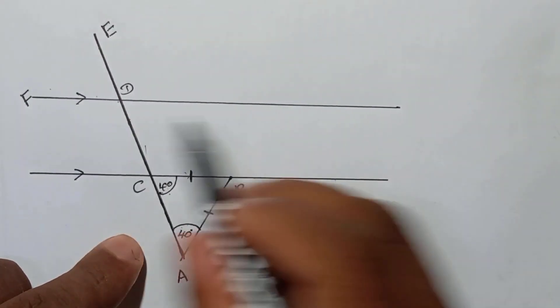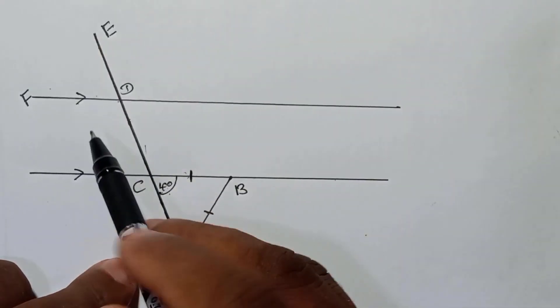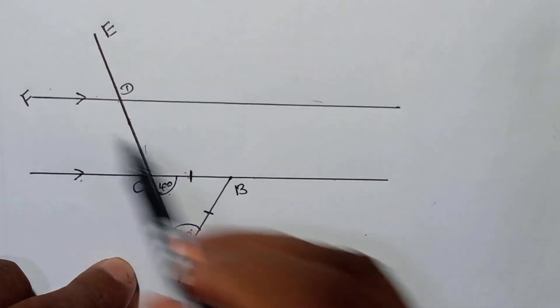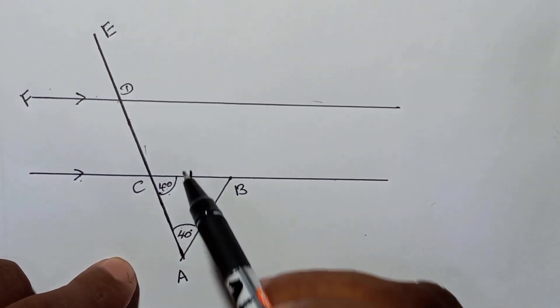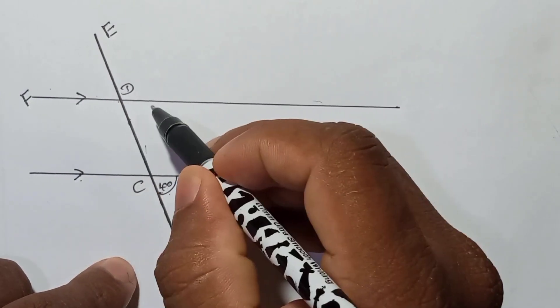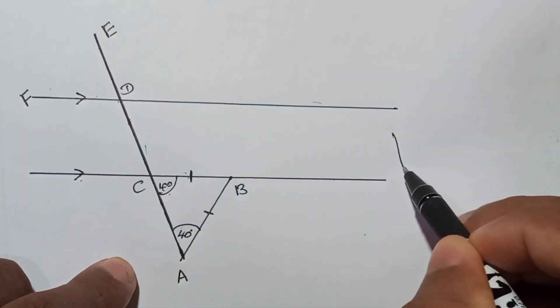After this, because these two lines are parallel, they put this parallel sign, that means these two lines are parallel. So if this is 40, this also must be 40 because we call it corresponding angle.